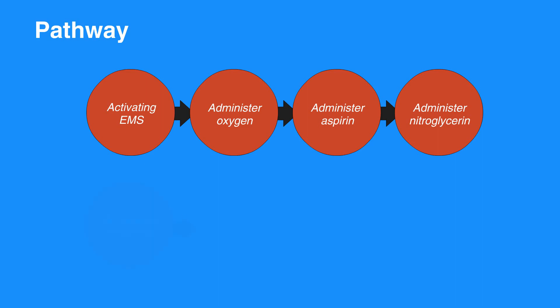Administer morphine: give 1 to 5 milligrams intravenously only if symptoms are not relieved by nitrates or if symptoms recur. Monitor blood pressure closely.